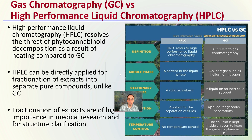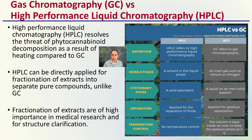Two methods are presented here: gas chromatography (GC) and HPLC, which stands for high performance liquid chromatography. HPLC resolves the threat of phytocannabinoid decomposition caused by heating compared with gas chromatography. HPLC can also be directly applied to fractions of extracts and to separate pure compounds, unlike gas chromatography. Fractions of extracts are of high importance in medical research and structure classification, which is why HPLC is typically favored over the more traditional gas chromatography, particularly in relation to cannabis.